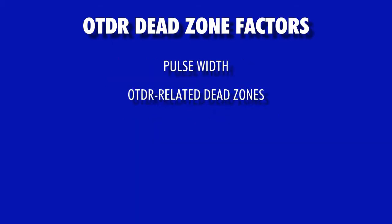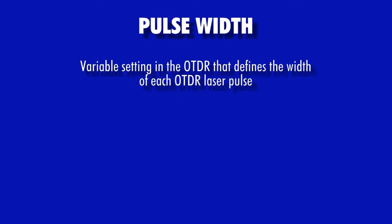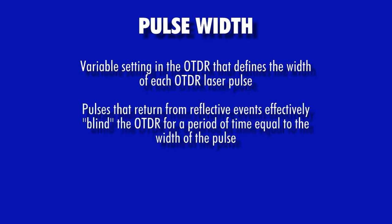There are two different factors that contribute to the overall dead zone of a particular OTDR test: pulse width and OTDR-related dead zones. The first factor is pulse width, which is one of the variable settings in an OTDR. Pulse width refers to the duration of each OTDR laser pulse. During OTDR measurements, the OTDR is effectively blinded for a period of time equal to the width of the pulse.